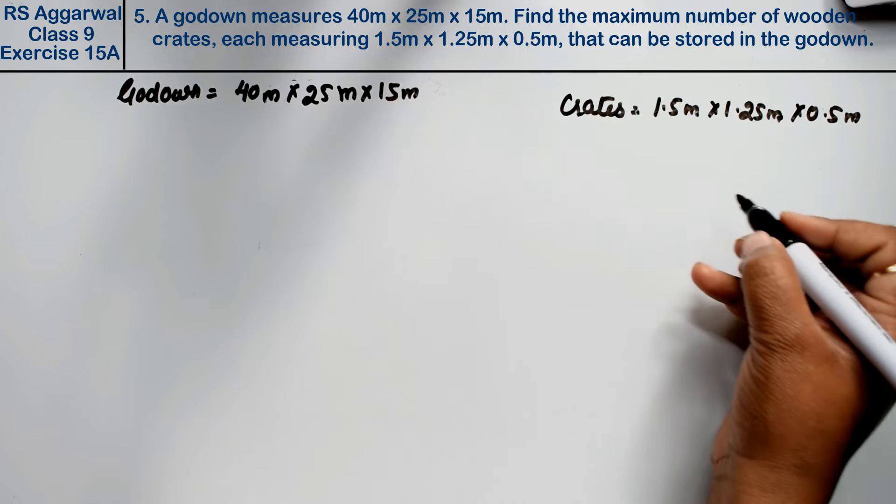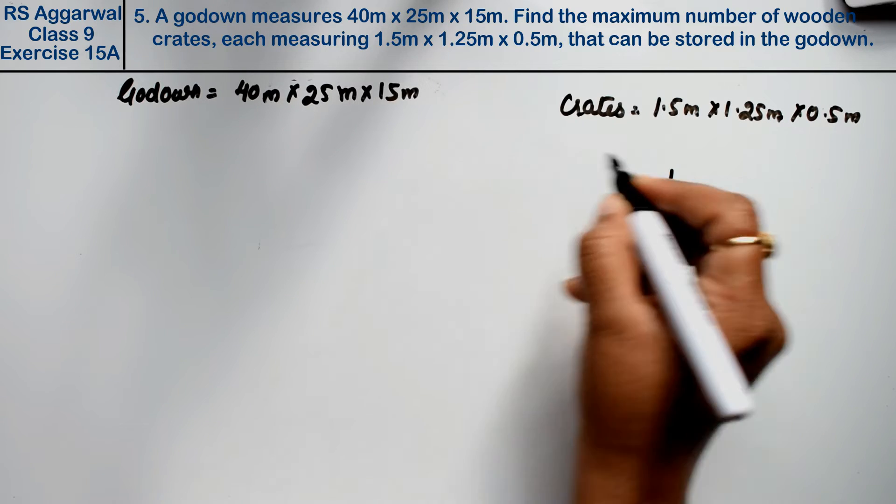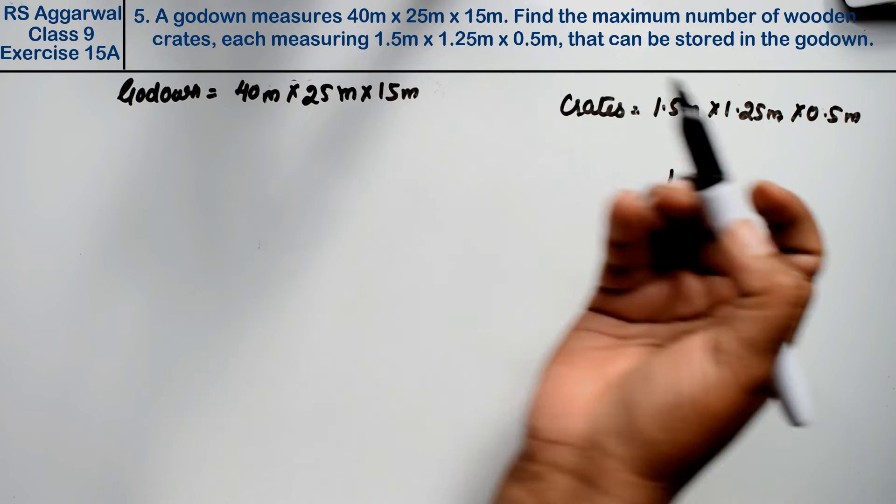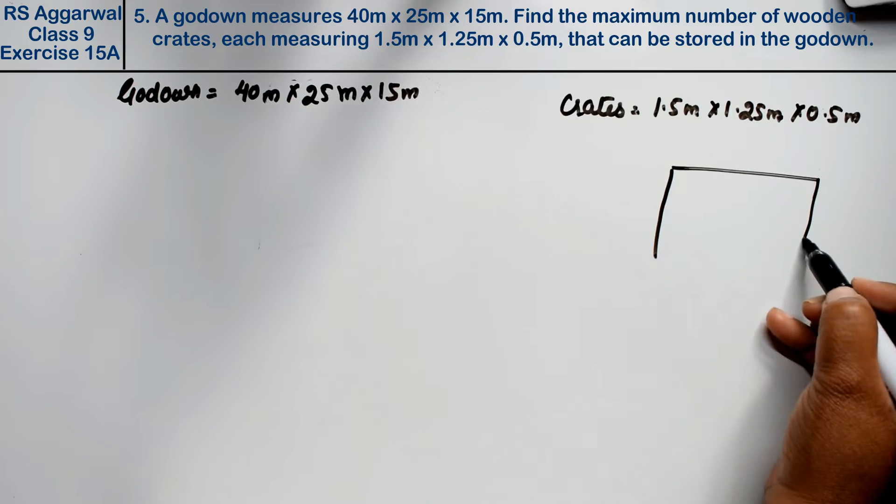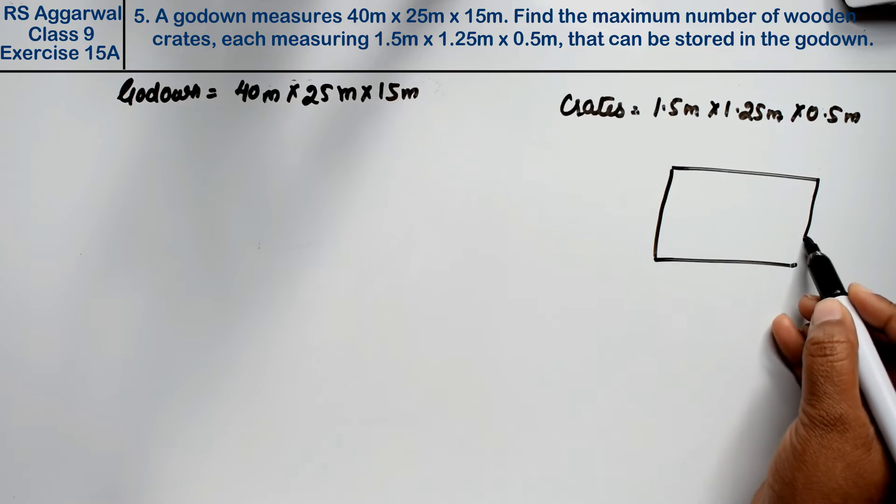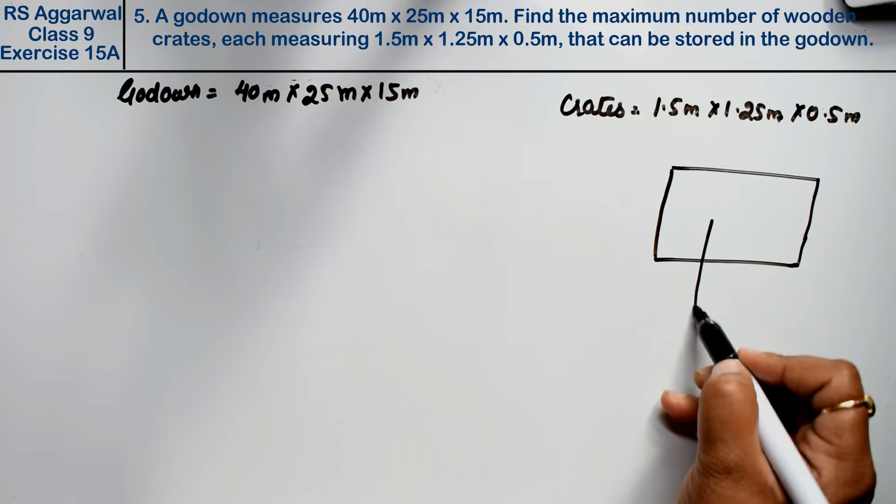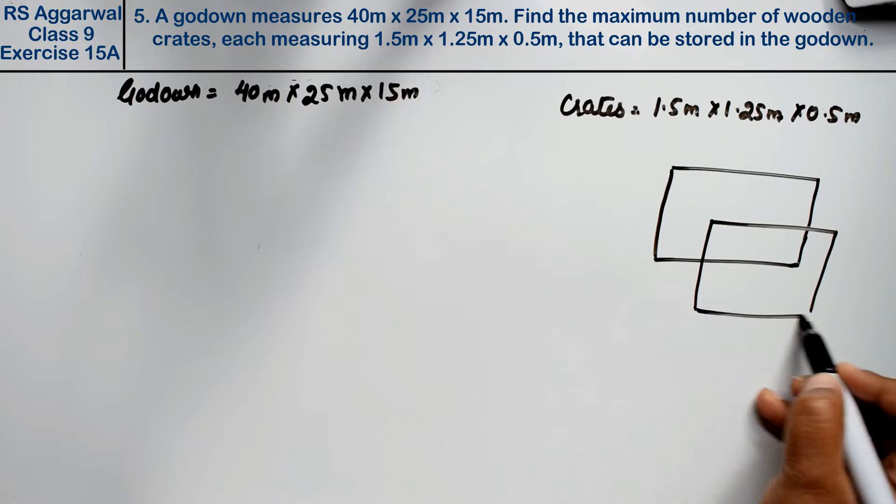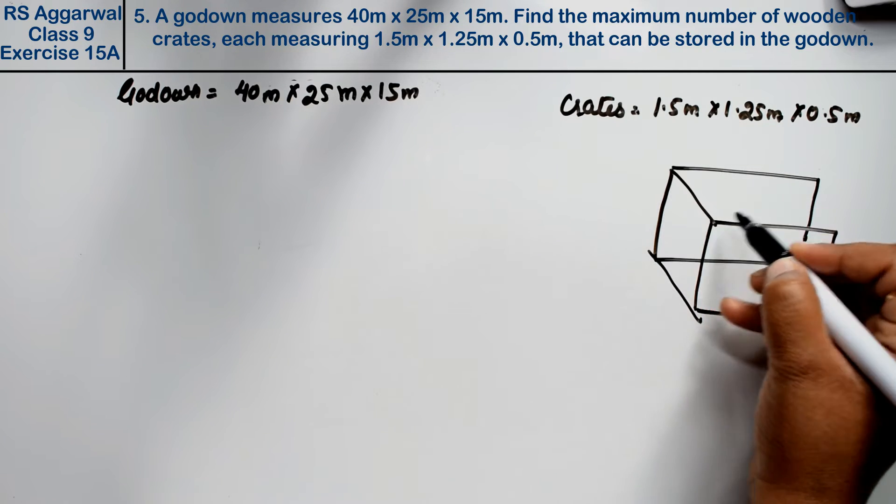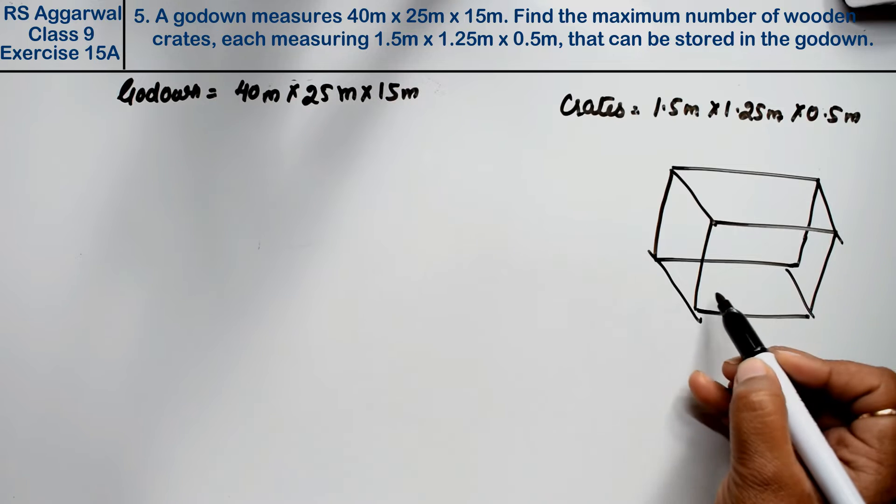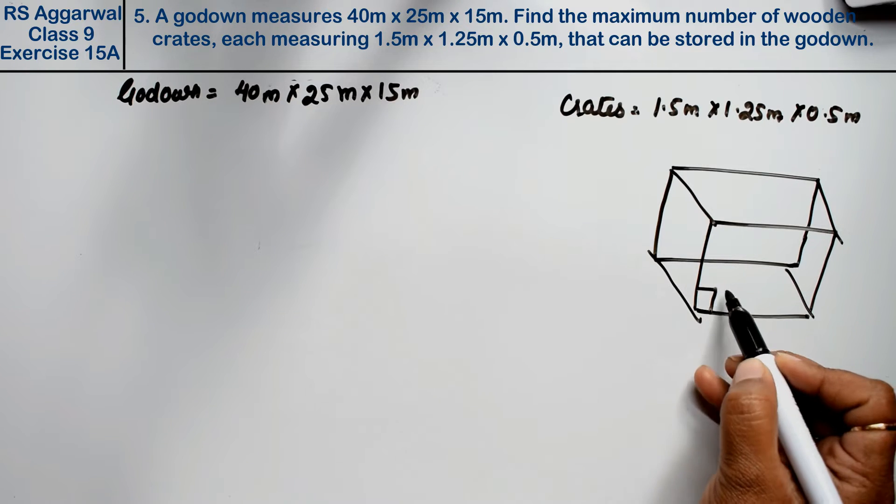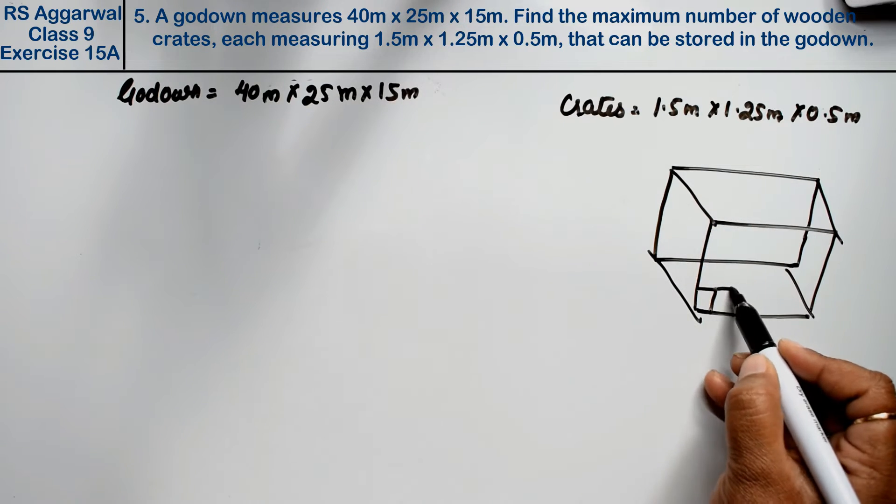Friends, this is a godown. If these three dimensions are different, it's a cuboid. If all three are the same, it's a cube. The godown has measurements, and the crates have measurements. So, how many crates can fit? We need to find this.